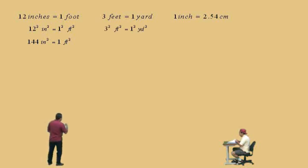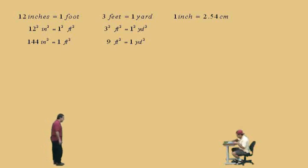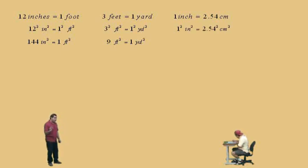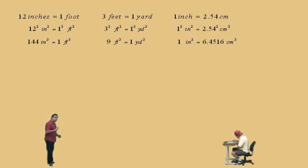9 feet squared is equal to 1 yard squared. We square both sides and get that 1 inch squared is equal to 6.4516 centimeters squared. These equations would be used to create conversion factors for area, and we'll be doing one of those very soon here.